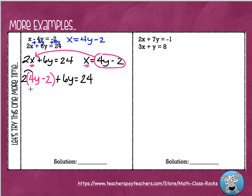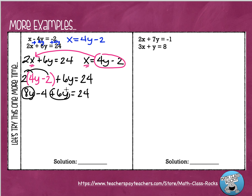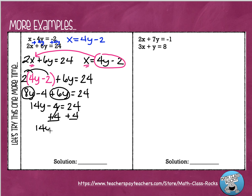Let's solve it using the distributive property. 2 times 4y is 8y, and 2 times negative 2 is negative 4. Bring down plus 6y equals 24. I have some like terms: I can add 8y with 6y, giving me 14y minus 4 equals 24. It's a two-stepper — add 4 on each side, giving me 14y equals 28. Then divide by 14 on each side, and it comes down to y equals 2.